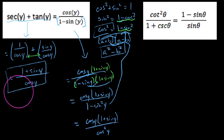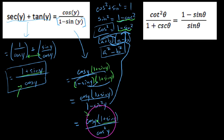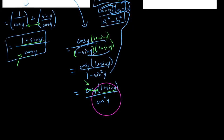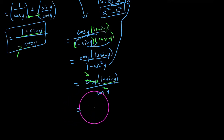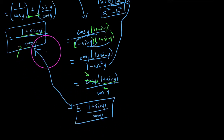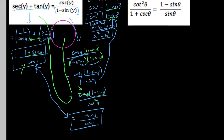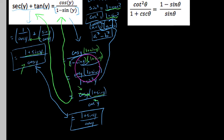Keeping in mind what we want to get to, we have 1 plus sine on top and cosine squared in the denominator. The cosine in the numerator cancels with one of the cosines in the denominator, leaving us with 1 plus sine y over cosine y. That matches exactly what we got from the left-hand side. So by working on both sides and meeting in the middle, we've proved the identity. Key takeaways: change things into sines and cosines, and multiply by a conjugate — that's the new idea in this video.